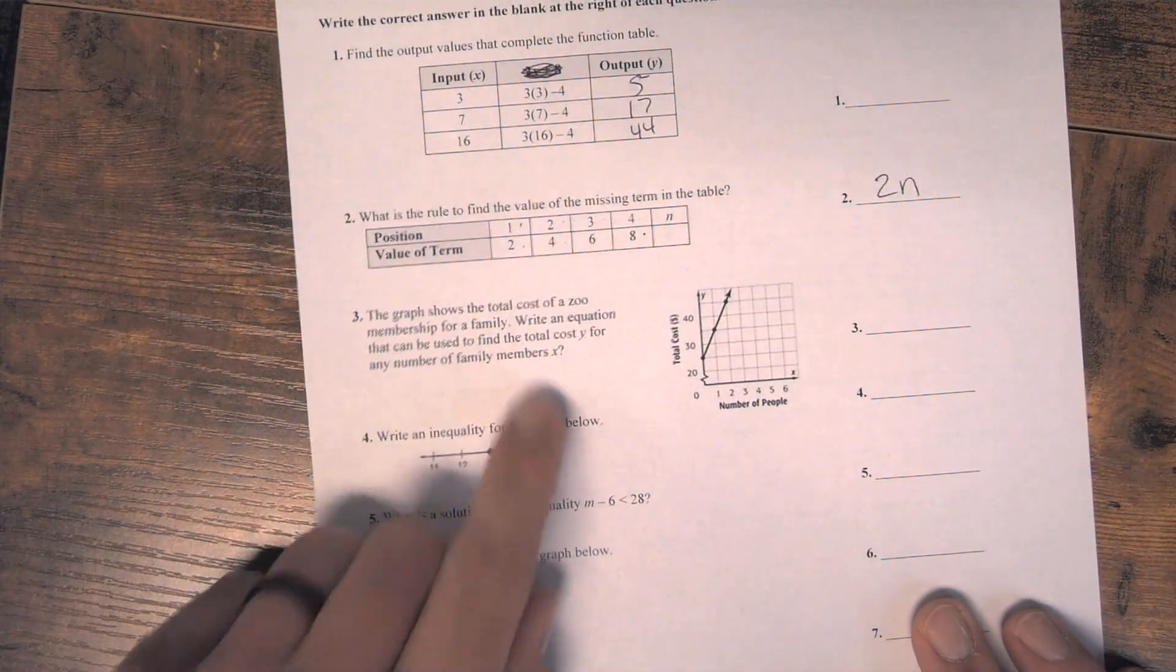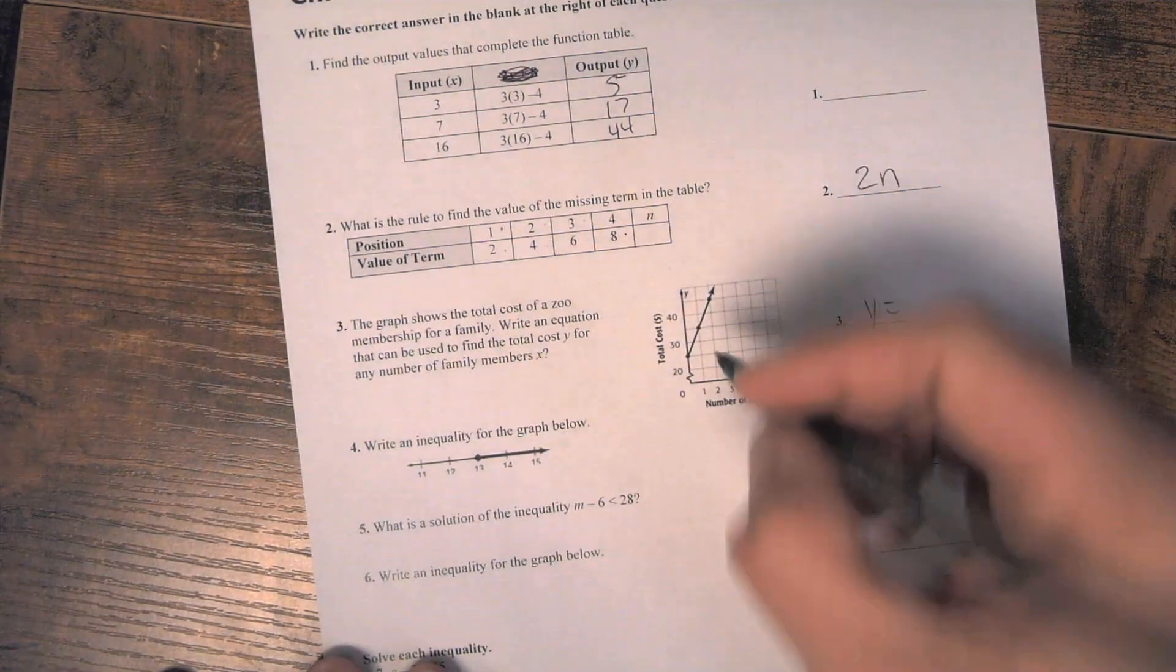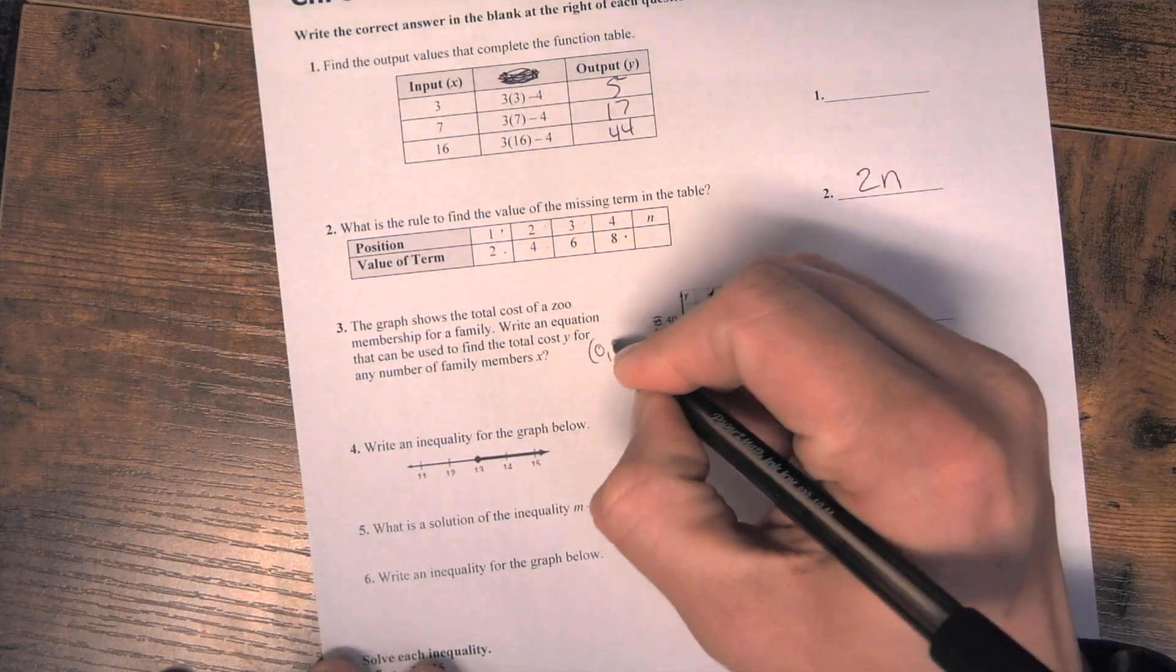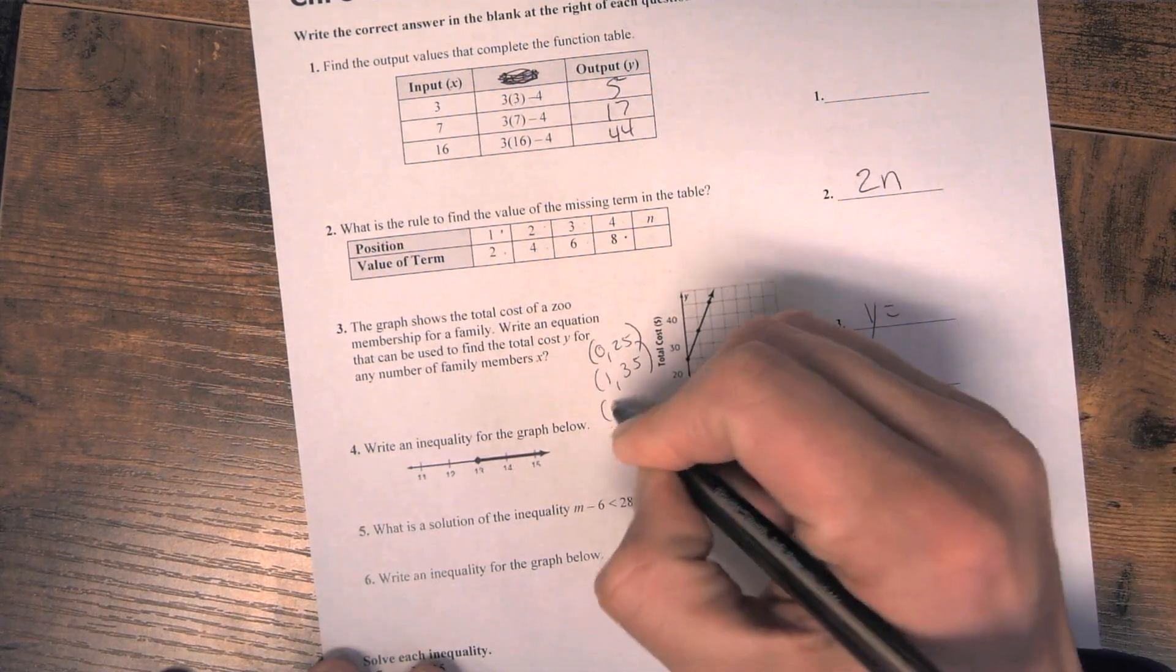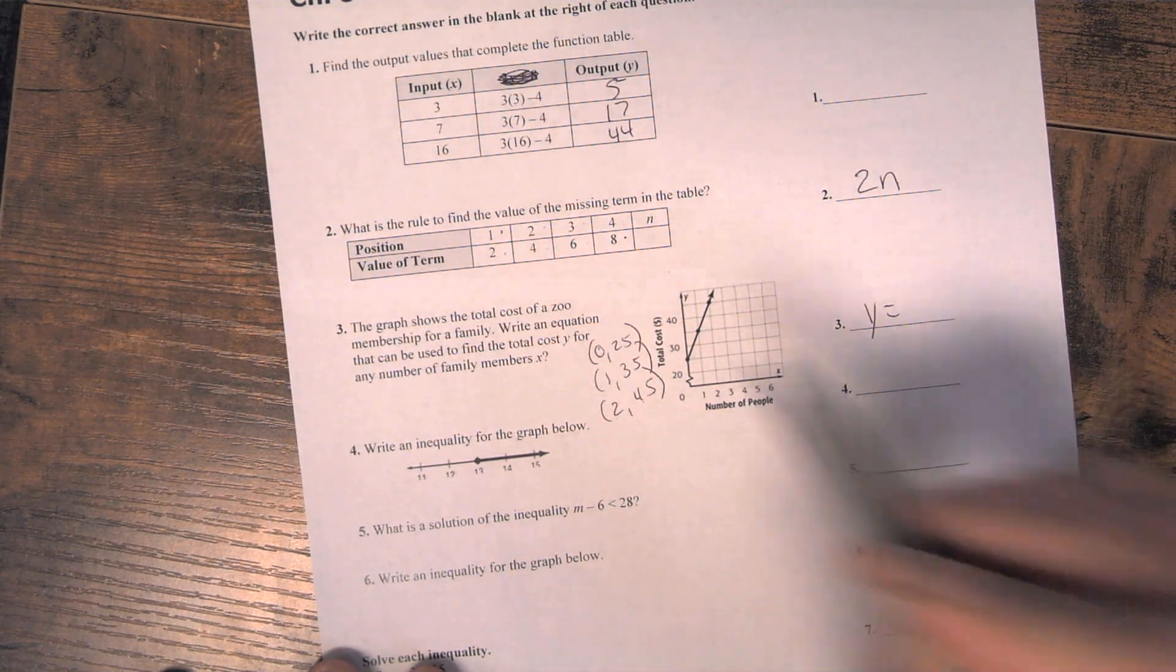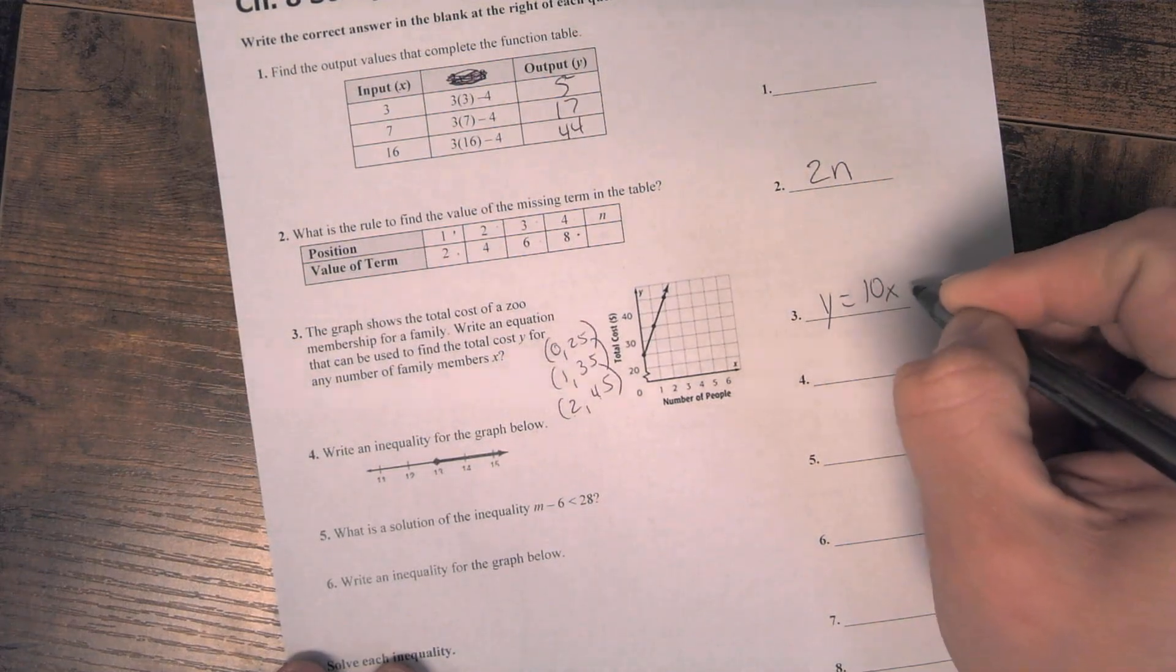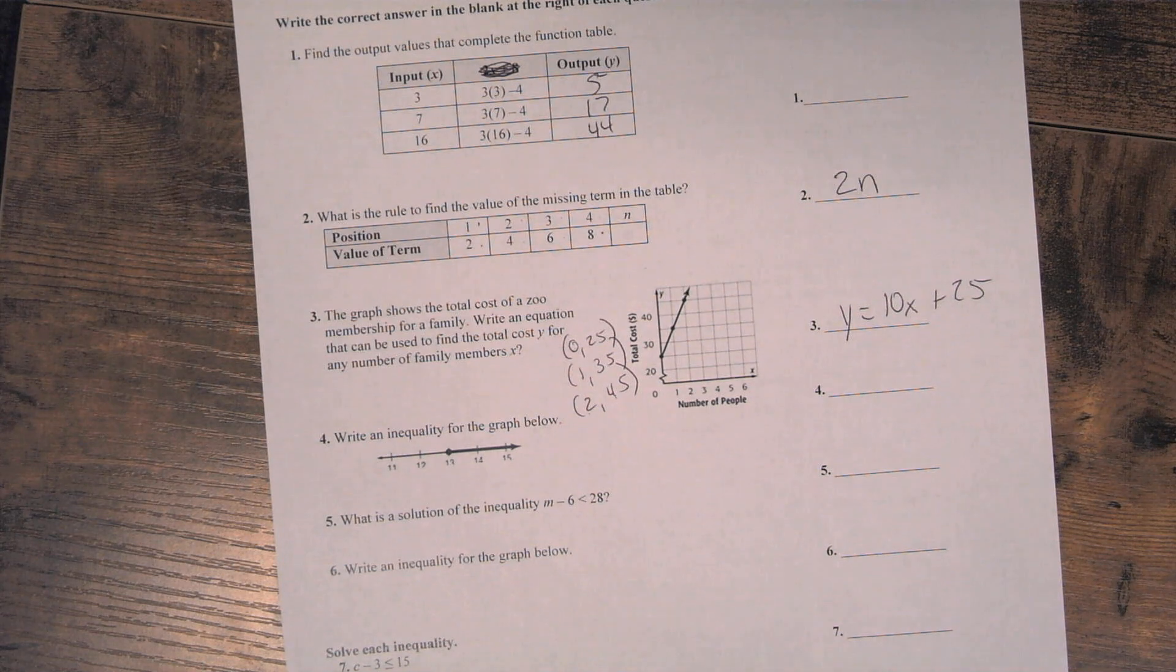Number 3, this is where you're just writing an equation. So it always starts out as y equals. And then to find out the rest of it, we're going to put our coordinates: 0, 25; 1, 35; 2, 45. And you got to figure out how they're going from 0 to 25, 1 to 35, 2 to 45. Well, they're multiplying by 10, 10x, plus 25. So that would be your equation.